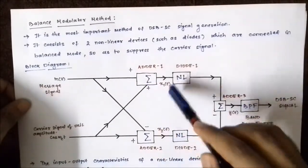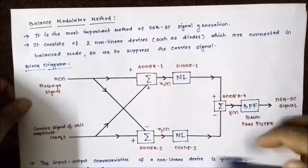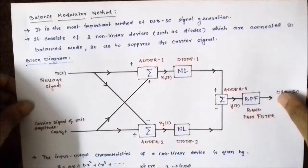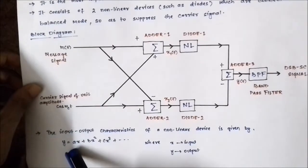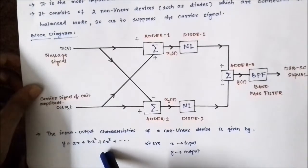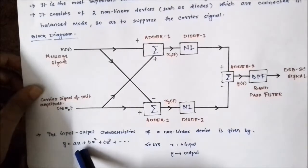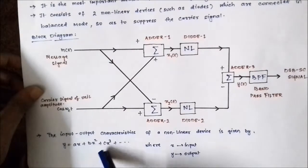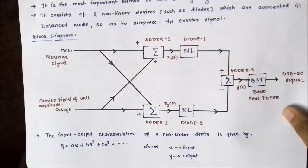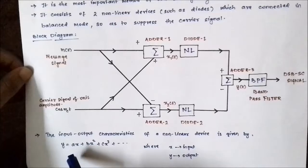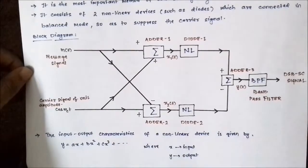The outputs of the two adders are fed to the diodes, which are nonlinear devices. The input-output characteristics are given by y = ax + bx² + cx³, where x is the input and y is the output. a, b, and c are constants depending upon the type of nonlinear device used, whether it is a diode or a transistor. We approximate it as y = ax + bx², ignoring the remaining higher-order terms.